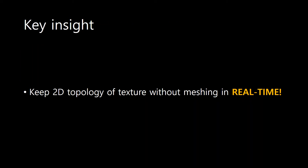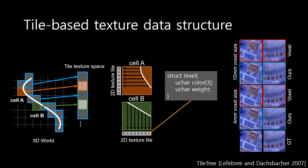To achieve our goal, our key insight for this work is to keep the 2D topology of the texture information by avoiding explicit meshing. We first propose a tile-based texture data structure specially designed for real-time 3D scanning. Inspired by the tile tree structure, we map texture to geometry by projecting an implicit surface to the assigned texture tile along the face direction. Our texture framework achieves high resolution even at low voxel resolution.